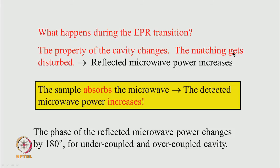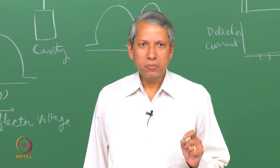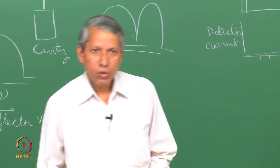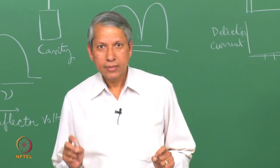Now, what happens during an EPR transition? The property of the cavity changes — the matching gets disturbed. Matching means that the reflection from the microwave cavity is very, very small, and that matching gets disturbed, so a little bit of microwave power is reflected. So this is a bit of a funny situation: when the sample absorbs microwave power, the detector actually sees more power falling on it. Unlike a conventional absorption spectrometer where the detector sees less power when the sample absorbs, here when the sample absorbs microwave, the detector sees more power, because the spectrometer is set up based on cavity matching such that very little power falls on the detector in the steady state where no absorption takes place.